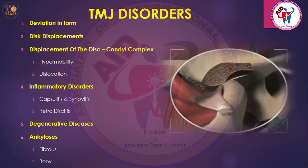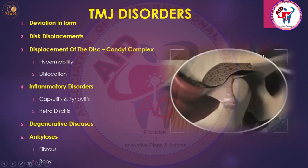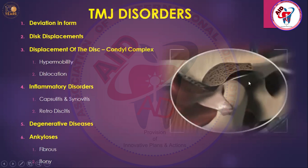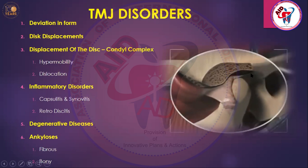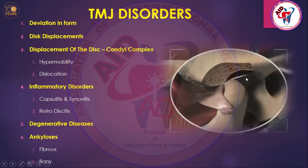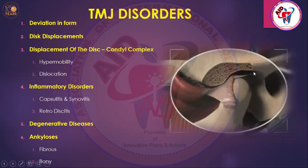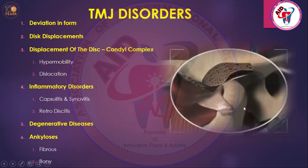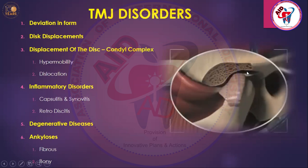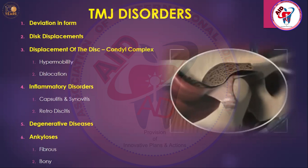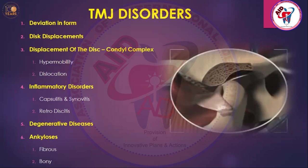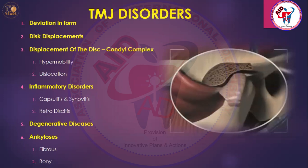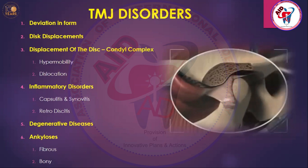Retrodiscitis is a very important condition. Looking at the posterior limit of the joint, there are retrodiscal ligaments in the bilaminar zone, attached posteriorly to the posterior temporal limit and to the neck of the condyle. If there is any problem to the posterior ligaments or any inflammatory lesion in that area, it is called retrodiscitis.